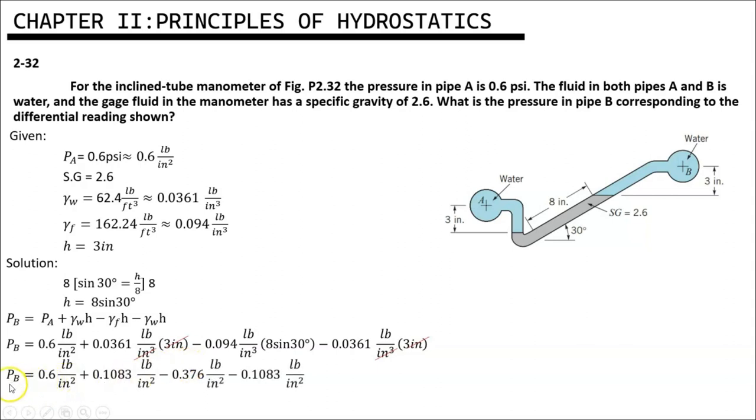Point B is equal to 0.6 pounds per square inch plus 0.1083 pounds per square inch minus 0.376 pounds per square inch minus 0.1083 pounds per square inch. And we get the value of 0.224 pounds per square inch, which is 0.224 psi.